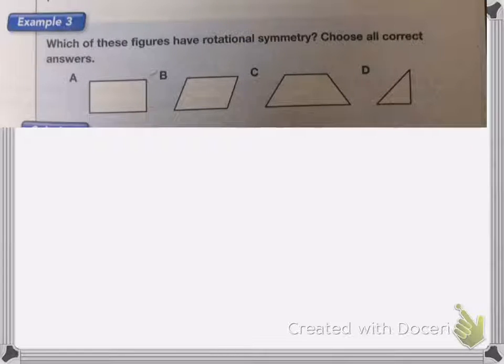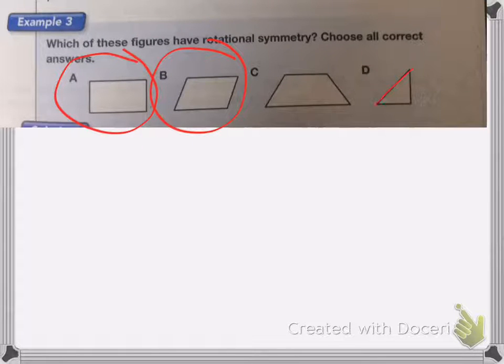In this case, only A and B have rotational symmetry because on C, none of these two sides are not the same length so I cannot have rotational symmetry. It's the same with this triangle. The sides are not the same length and it's at a weird angle so I can't get it to be the same. These ones only look the same after a complete turn.